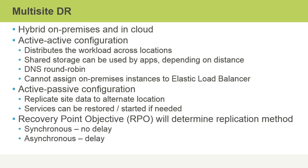The recovery point objective, or RPO, will determine the replication method. For example, synchronous replication means there is no delay — when we do a disk write at our primary location, at the same time we're doing a write at our alternate location. With asynchronous replication, there is a delay; it doesn't necessarily happen at the same time, hence asynchronous.